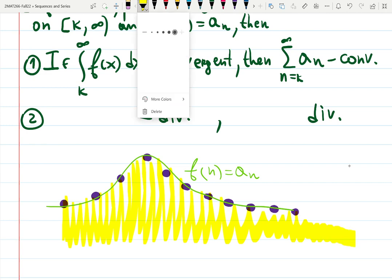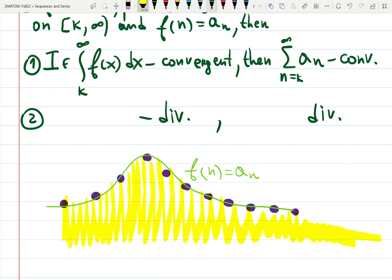and becomes convergent - a finite number, converges to a finite number - then this series, which are those heights, sum of those heights, also converges. Make sense? That's kind of the intuitive idea.